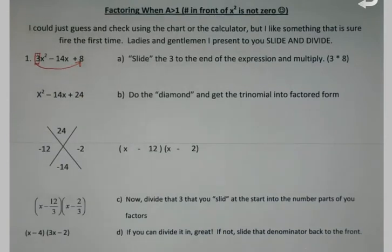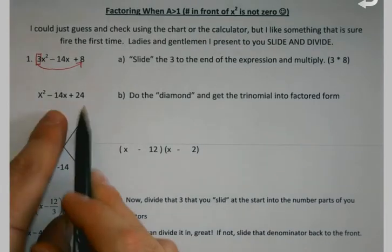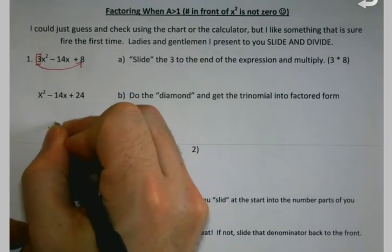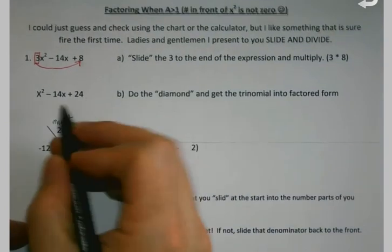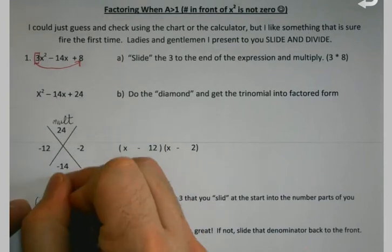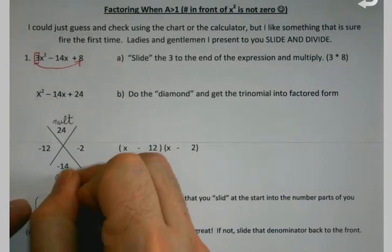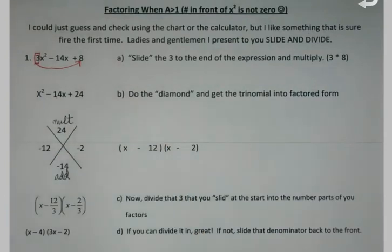Once I get that slid down there, now it's like what we've been doing for the last two days. I'm going to do my diamond. The number on the end is the one I'm going to multiply. The number in the middle is still the one that I need the numbers to add up to.